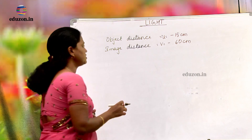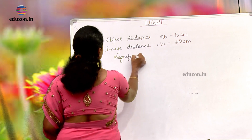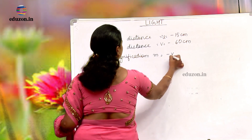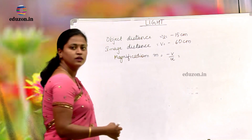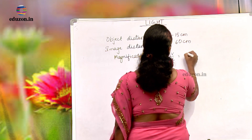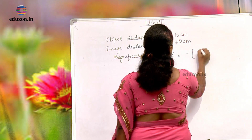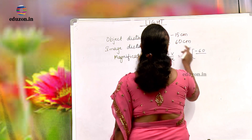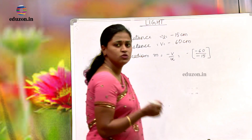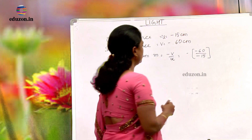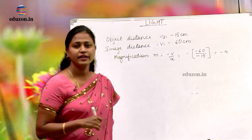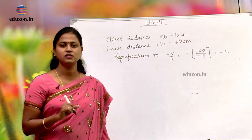What is the formula for magnification? Magnification M is given by minus V by U. We write down the values: minus of V is minus 60 and U is minus 15. Solving, we get minus 4. So, the magnification is minus 4.